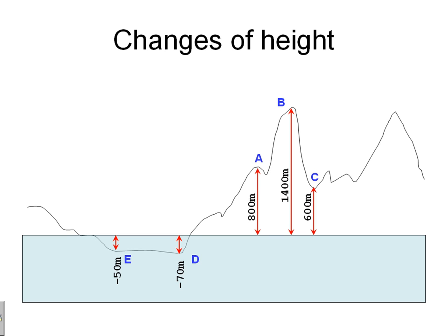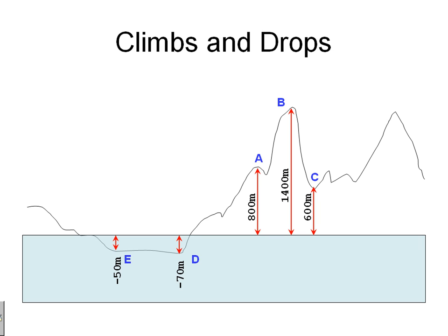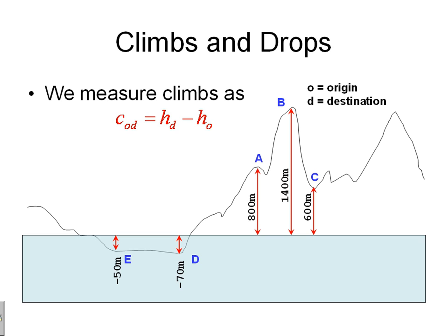Changes of heights. Very often, we move. We have a trajectory going from an origin to a destination. We define climbs and drops. Origins and destination. When we move up, we define a climb as how many meters we're going to climb up this way. A climb from an origin O to a destination D is how much higher the destination is than the origin.